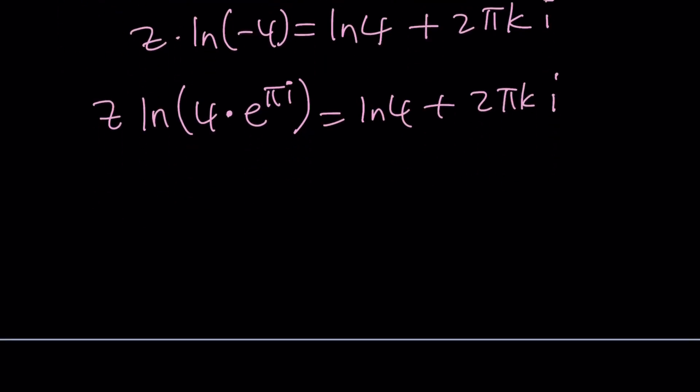Now, again, we get a product. So, let's go ahead and turn this into the sum of two logarithms. ln 4 plus ln e to the power pi i.